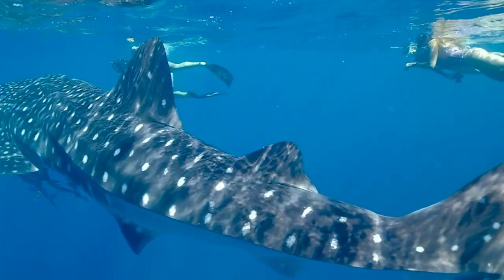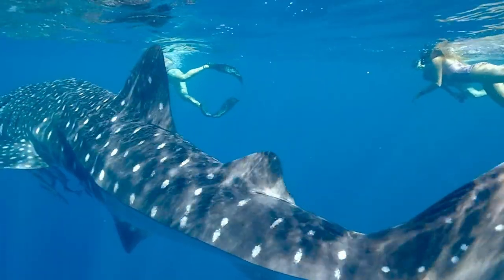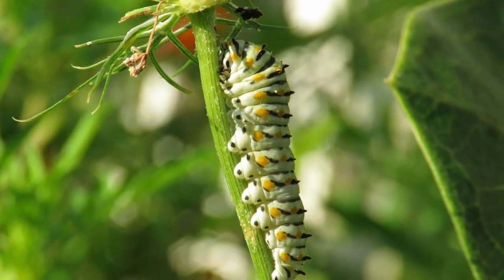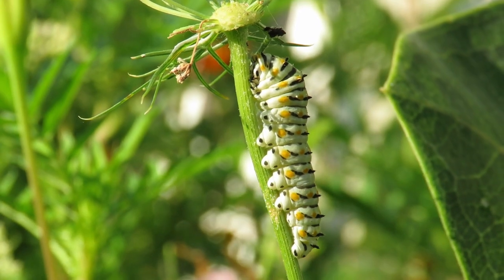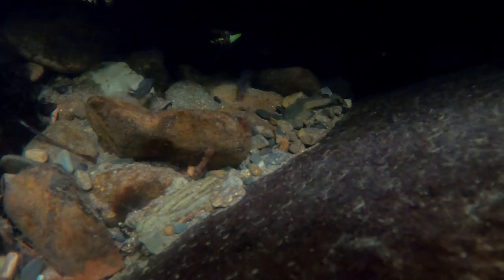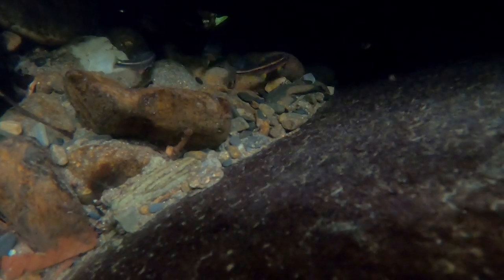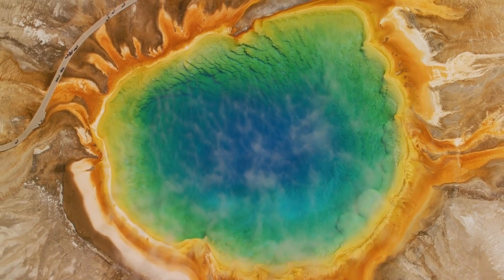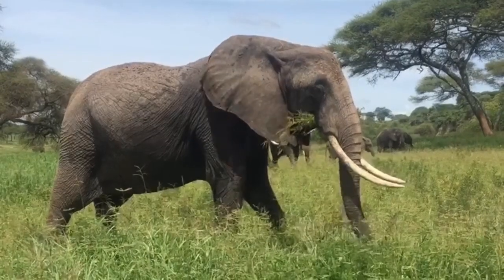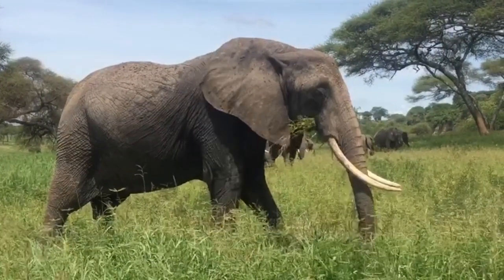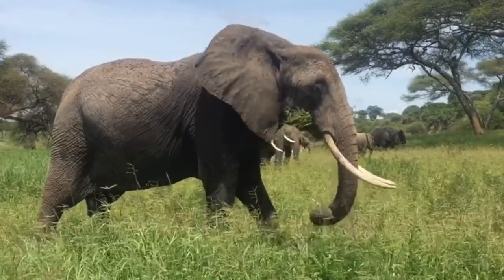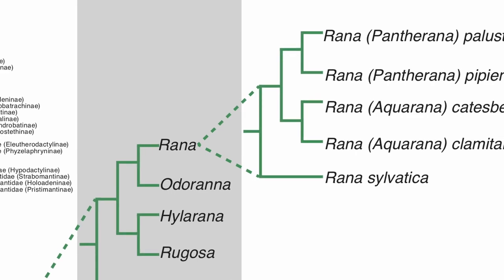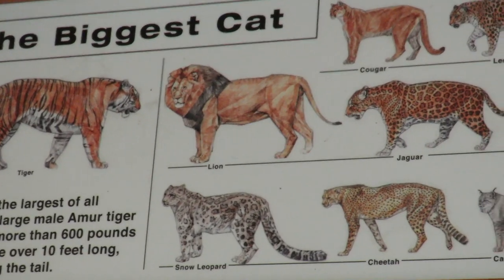Life is everywhere we look. It's in the skies, our own backyards, our rivers and streams, even in places that are impossible for us to survive in. With all these different kinds of life, it's hard to keep everything organized. That's why scientists have come up with taxonomy, the science of describing and classifying all organisms based on similar traits.